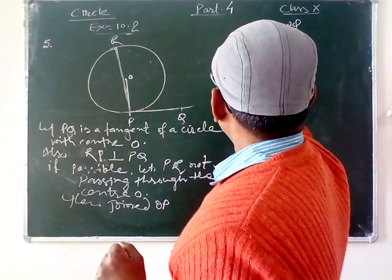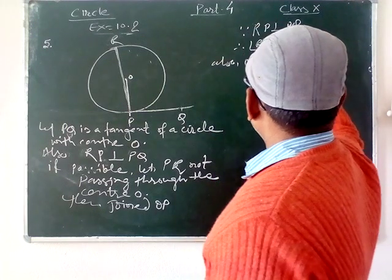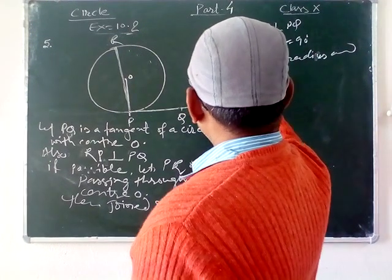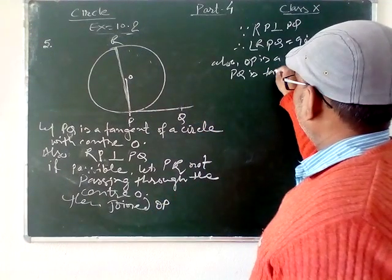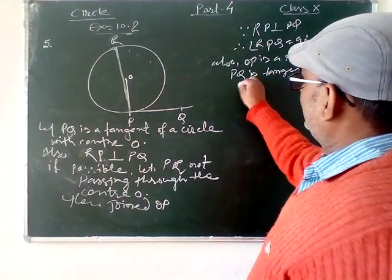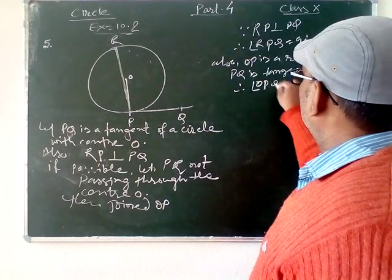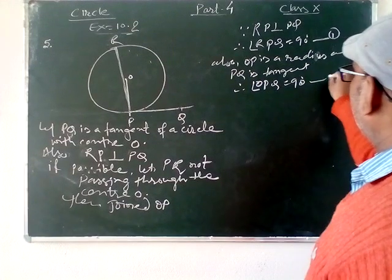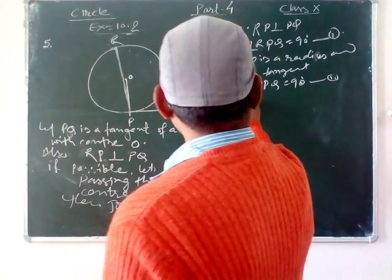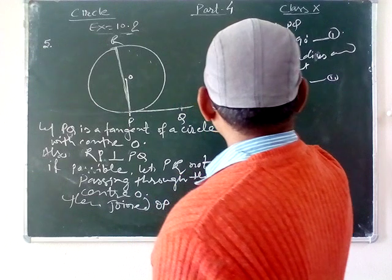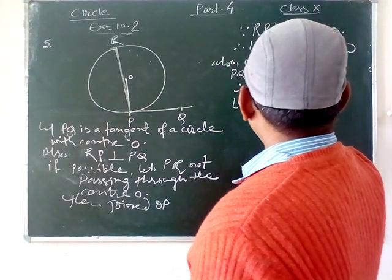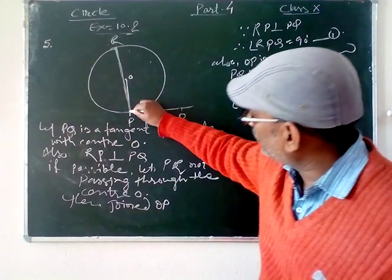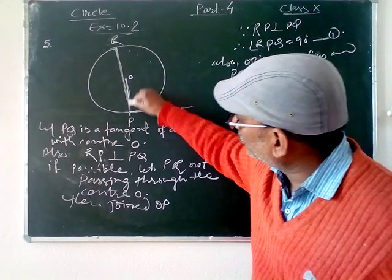Also, OP is a radius and PQ is tangent, therefore angle OPQ equals 90 degrees. This is equation 1 and equation 2. From equations 1 and 2 you can say angle RPQ is equal to angle OPQ.